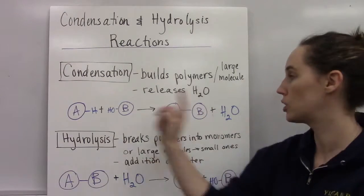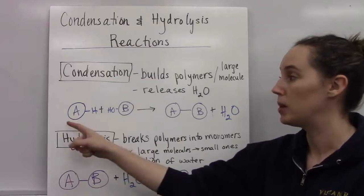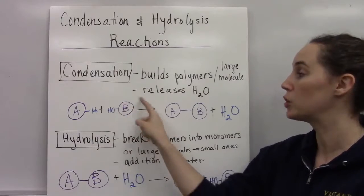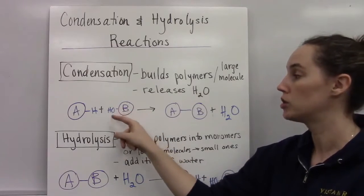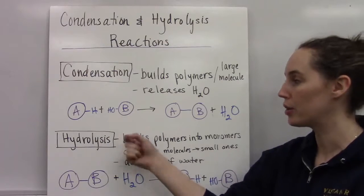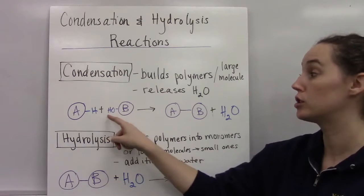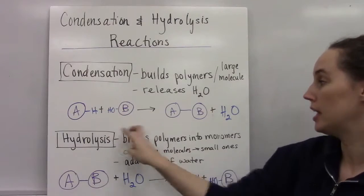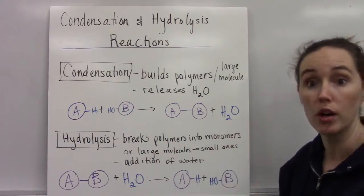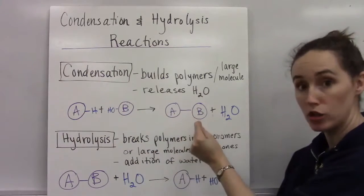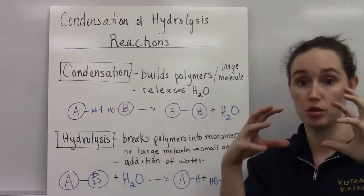Here's a quick diagram of that. We have molecule A, and it has a hydrogen coming off of it, bonded to it, and then molecule B has an OH bonded to it. When we put these together, these two H's and this O come away. They join together to make water, and then A and B can now bond with each other. That's a condensation reaction.